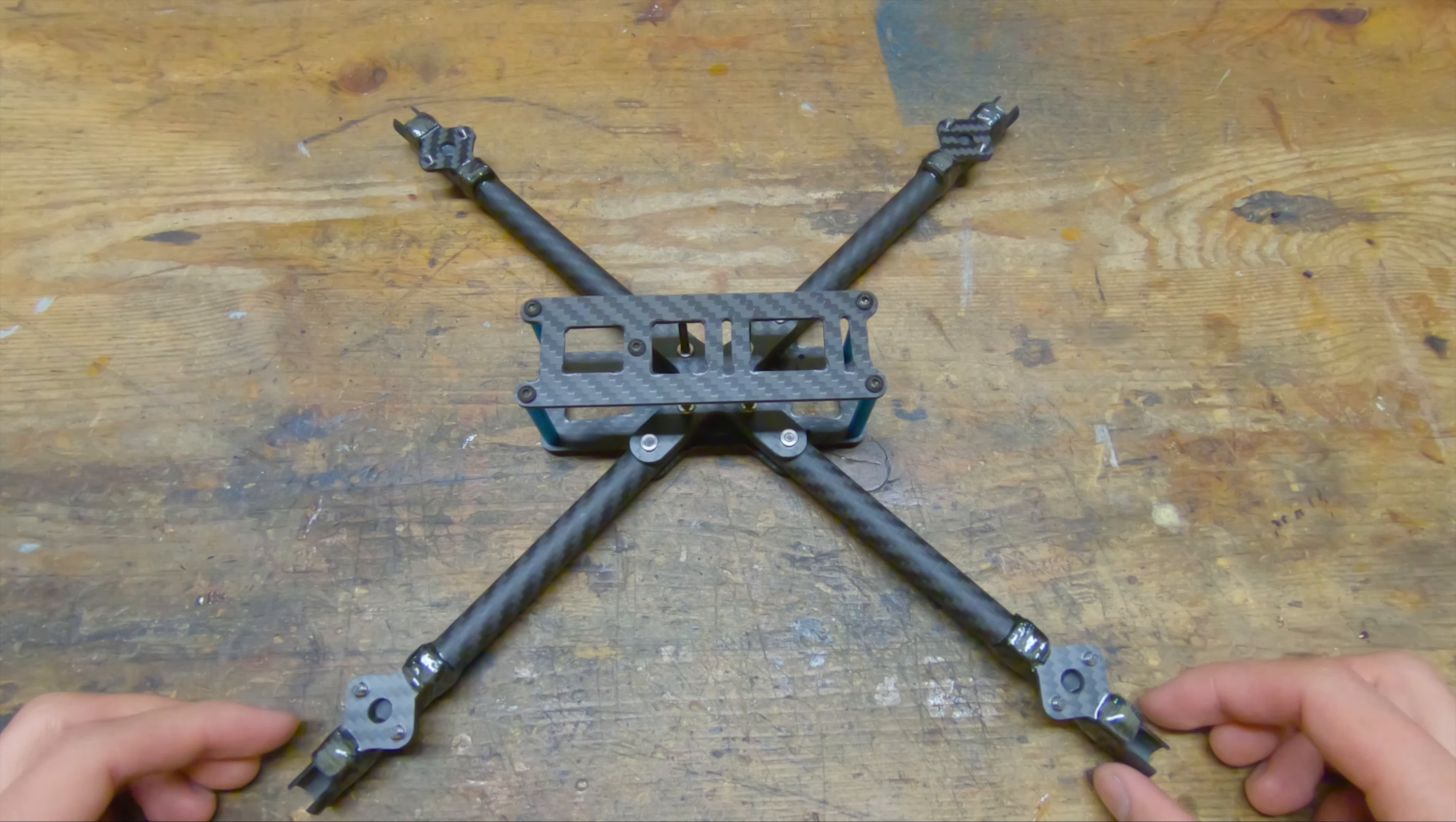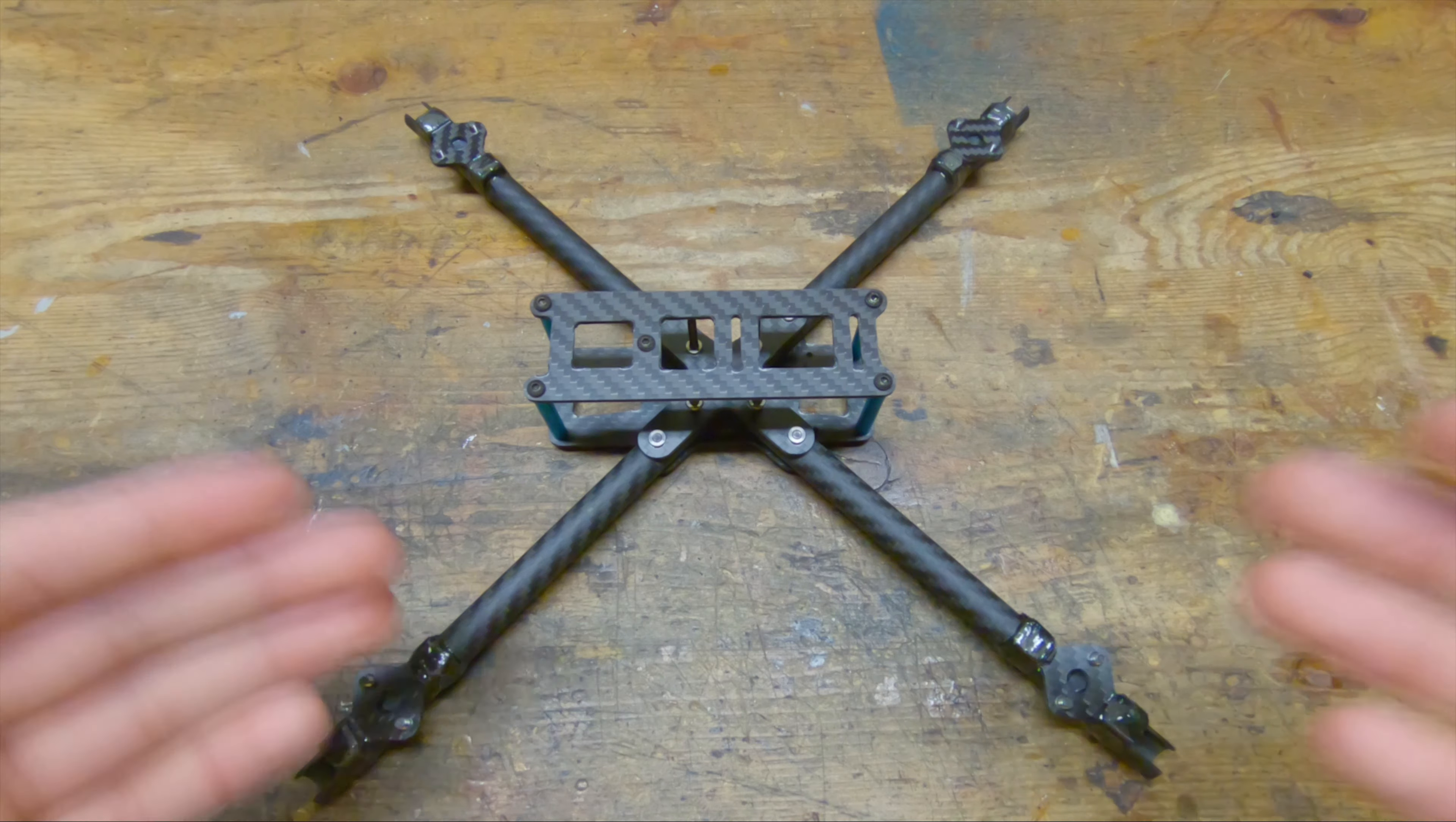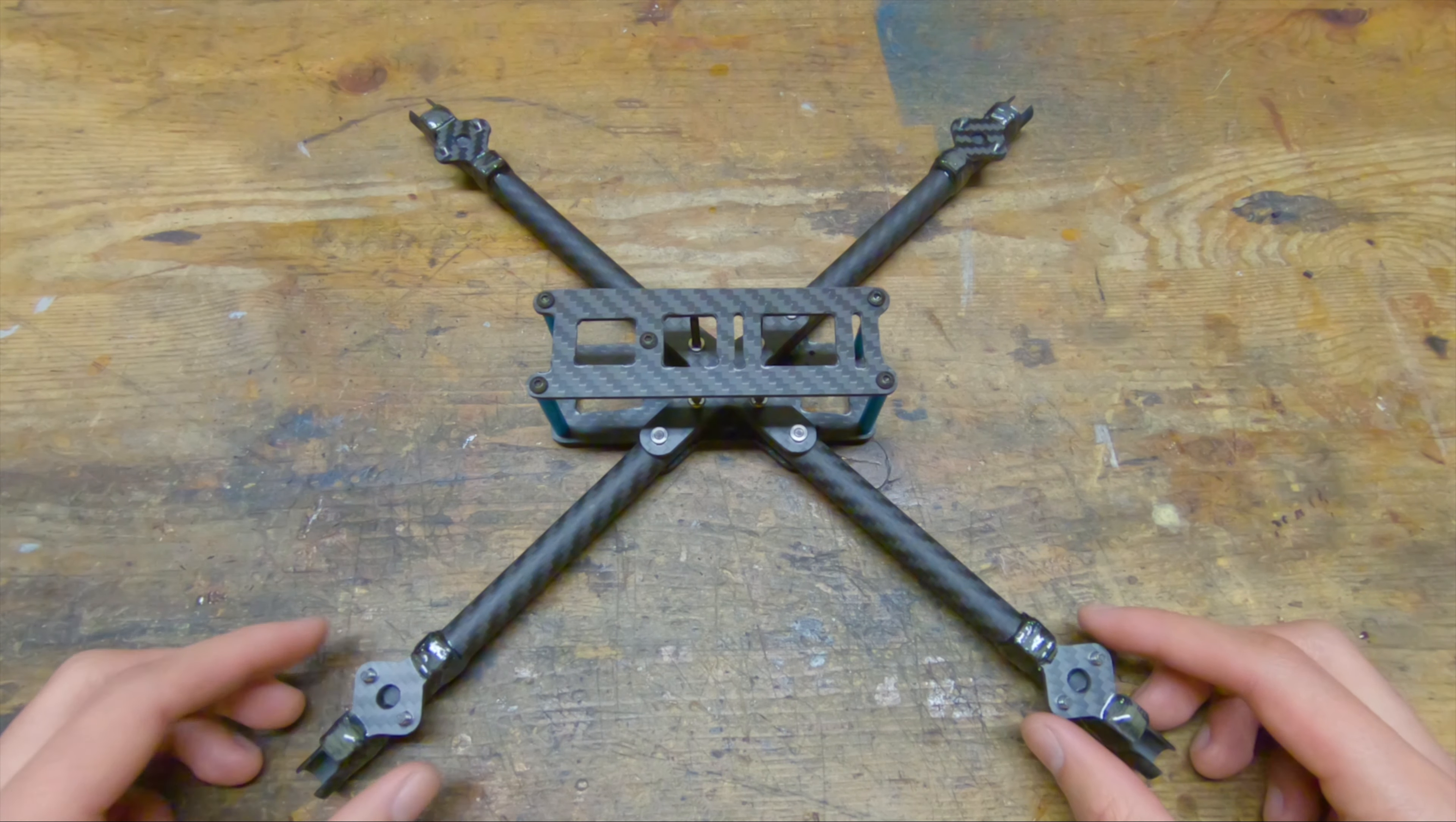The biggest change to version 6 compared to version 5 is that I've moved to a 20 by 20 mounting pattern for the stack. Yes, I use the arm screws as the stack screws to save weight. The reason that I've moved to 20 by 20 is that all of the modern 30 by 30 4-in-1 ESCs are totally overkill for my application. Most of them are rated for 60 amps or more per motor, which is insane compared to the older 30 by 30 4-in-1 ESCs that were closer to 30 amps per motor.